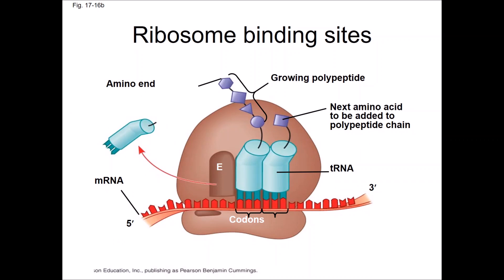When a ribosome moves downstream on an mRNA molecule to read the next codon, it moves three nucleotides at a time. Any tRNAs hydrogen-bonded to the mRNA stay bound to the mRNA and do not move with the ribosome. The tRNA that was in the P site has lost its polypeptide chain and moves to the E site, where hydrogen bonding between it and the mRNA molecule is disrupted, and it exits the ribosome. The tRNA that was in the A site has gained the growing polypeptide chain as the C-terminal amino acid undergoes a polymerization reaction with its amino acid. This frees up the A site for a new charged tRNA.